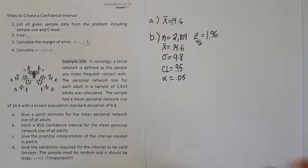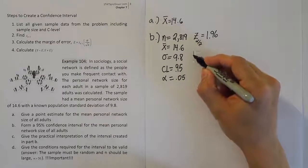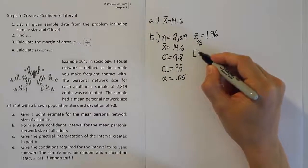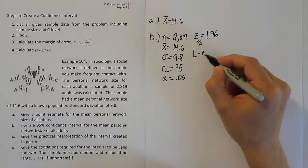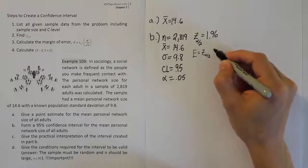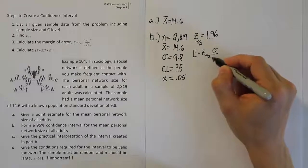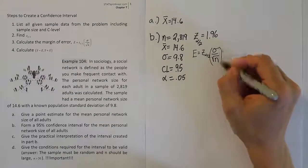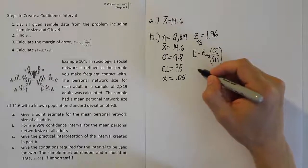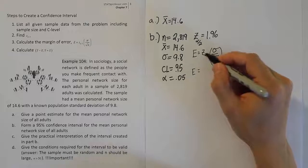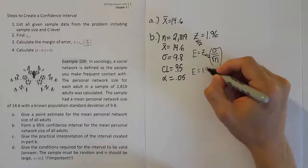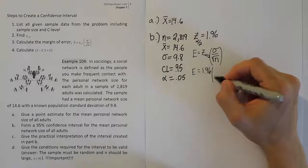We found our Z α/2 value to be 1.96. Now we move on to step 3 of the process, which is to find the margin of error. The margin of error is a formula: Z α/2 times σ over the square root of n. Let's fill in those numbers. Z α/2 is 1.96, σ is 9.8, and the square root of n is the square root of 2,819.